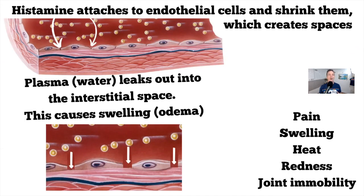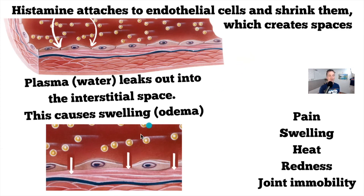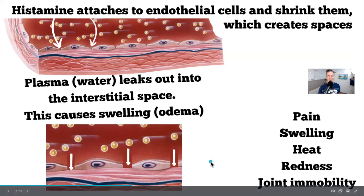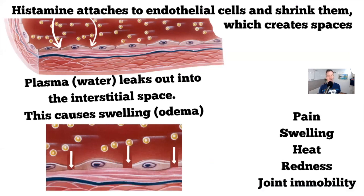Once histamine is in your system, picture the inside of an arterial wall where cells are very tightly bound together. Histamine attaches to these cells and actually shrinks them, which creates space in between. Plasma — essentially blood plasma with a lot of water — can then leak from the blood vessel into the interstitial space, and this causes swelling. If you ever see an area like your elbow or knee start to swell up, this is the process making it happen.